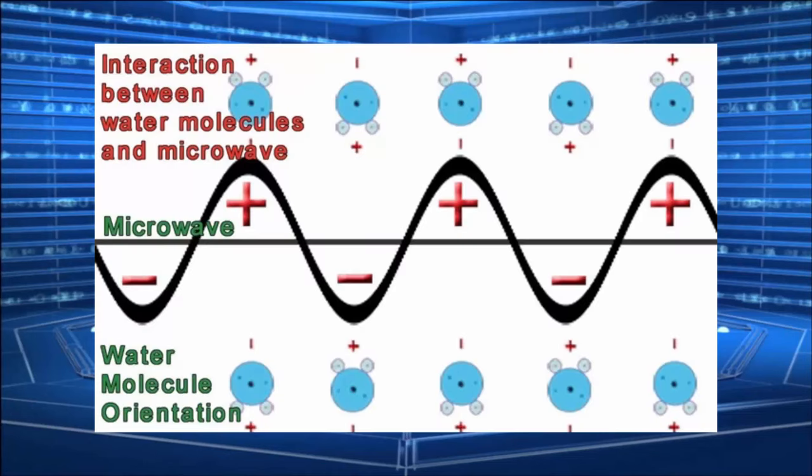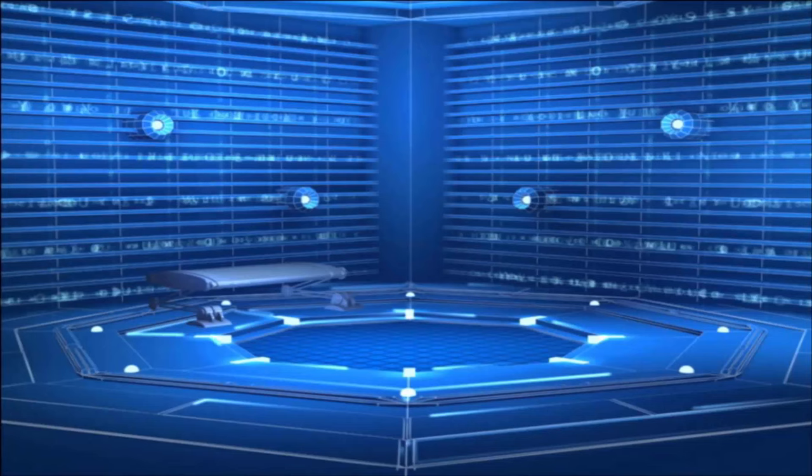And when those microwaves hit your food, they penetrate it and excite the water molecules, changing their polarity, making them vibrate, and the vibrating molecules are what actually heat up your food. When molecules vibrate, they create kinetic heat. So, that's pretty cool.